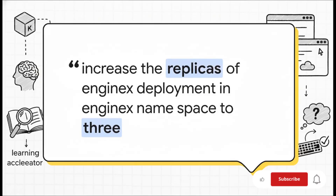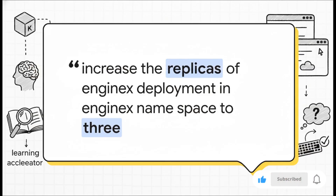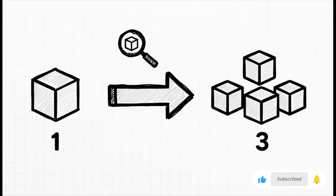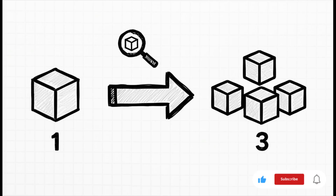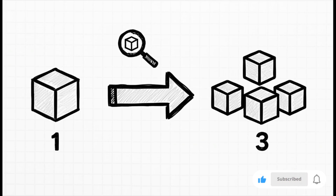For our last test, let's try something you'd actually do day-to-day: scaling a service. We're going to ask it to find that NGINX deployment we just made and bump up the number of replicas to three. And again, home run. It finds the right resource, creates the correct scale command, and runs it. If we check the pods again, we see three of them running. So it can create things from scratch, handle multi-step instructions, and even modify existing resources. That's pretty powerful.